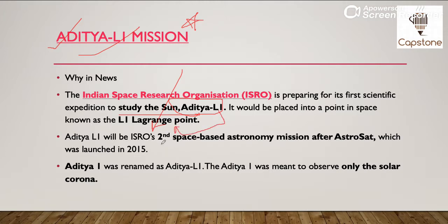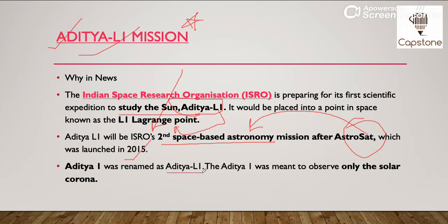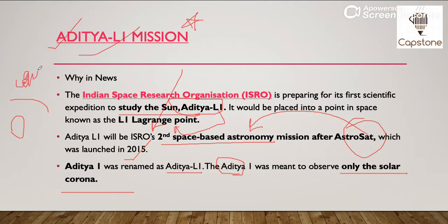Aditya L1 will be ISRO's second space-based astronomy mission after AstroSat. AstroSat ke baad, ye ISRO ka second space-based astronomy mission hoga. Aur AstroSat ko launch kiya gaya tha 2015 mein. Aditya 1 was renamed as Aditya L1. Jo Aditya 1 tha, uska purpose tha sirf aur sirf solar corona ko samajhna — jo sun ka outer part hai, sabse outer portion hai, jise corona kaha jata hai — use samajhna Aditya 1 ka mission tha.